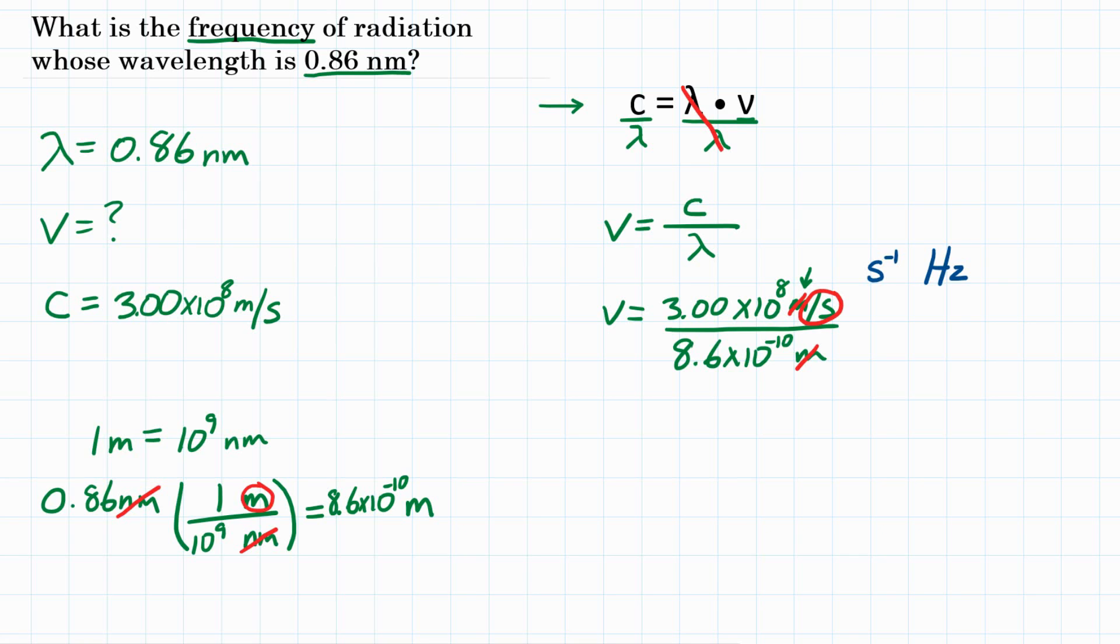So let's do the math. You're going to punch in your calculator 3.00 times 10 to the eighth. And we're going to divide by everything in the denominator. Now, since we have scientific notation in our denominator, we have 8.6 times 10 to the negative 10th, we need to make sure that all stays together. So there's a couple ways to do this. One way is to use parentheses.